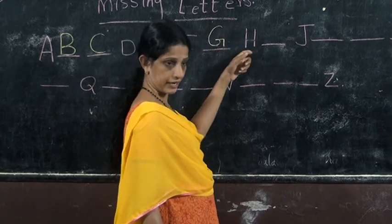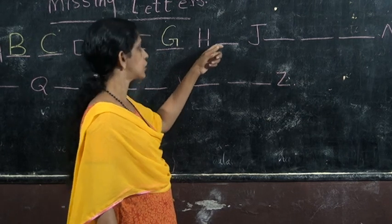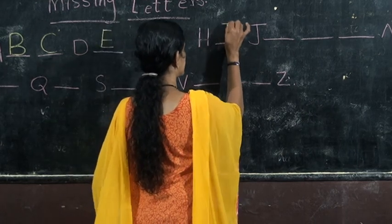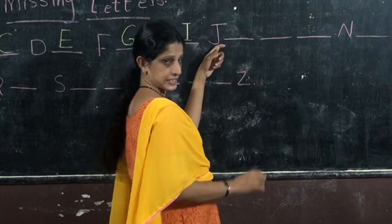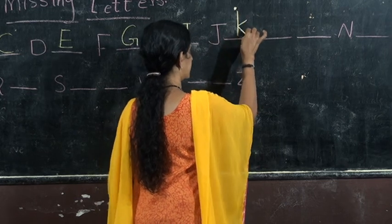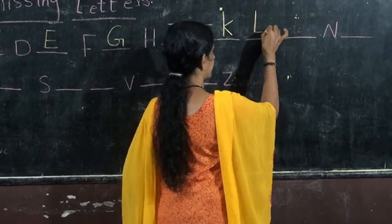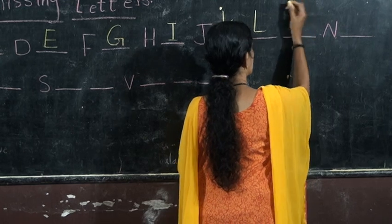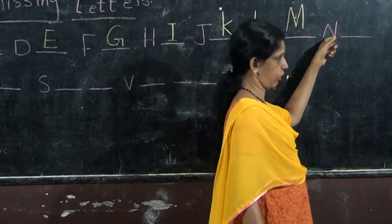Then after G? H. H is written here, so we don't want to write H again. What letter comes after H? I. Then after I? J. Very good. J is here. Then after J? K. After K? L. After L? M. After M? N. Okay, good.